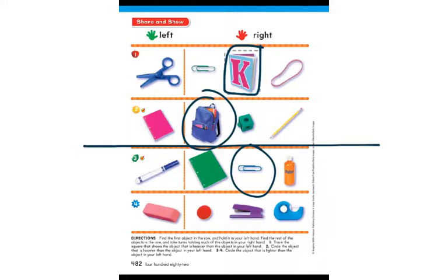Now we have our last row. The first box has an eraser — if you have one, hold it in your left hand. We need to find an object that is lighter than the eraser. Erasers are pretty light to begin with, so this might be tricky. We have a little counter, a stapler, and tape. If we had an eraser in one hand, which object would be lighter — the counter, the stapler, or the tape? The counter will be much lighter than the eraser.